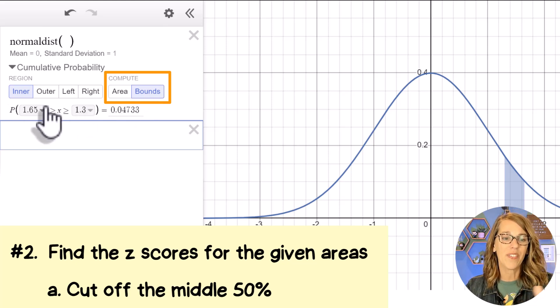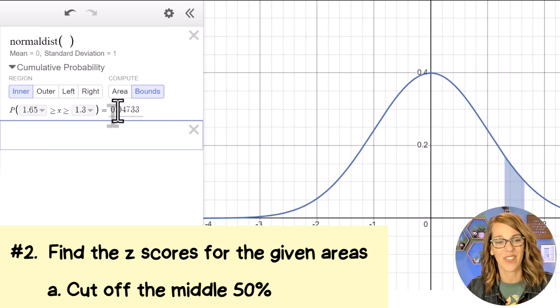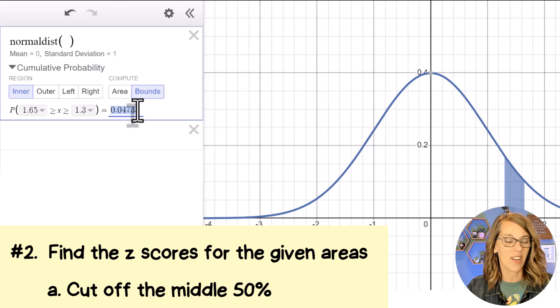Notice how now the values inside the parentheses are grayed out. And my answer on the other side, that area is not grayed out. So I'm going to type right over this area and 50% would be 0.5. So I'm going to change that to 0.5.